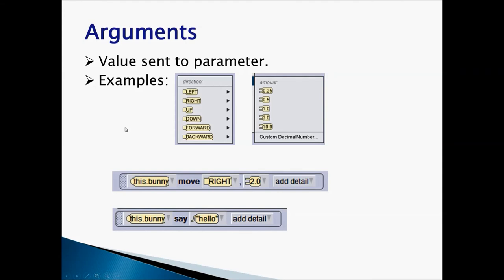Arguments. Arguments are nothing but the value sent to the parameter. Remember we talked about parameter is like a container. Every container will contain a value. So the value is argument. Now when we talk about some examples, you have been using the direction values like left, right, up, down, forward, backward. These are the arguments. And for the amount, you have used 0.25, 0.5, 1, 2, 10, etc. So these are some examples of arguments.